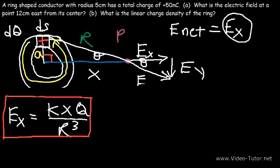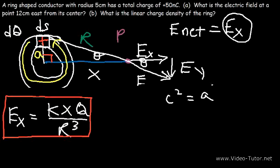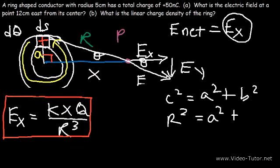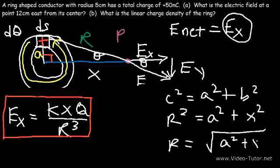Now, what is R? We have a right triangle where X and A are the legs and R is the hypotenuse. Based on the Pythagorean theorem, R = √(A² + X²). So that's another equation needed for this problem.